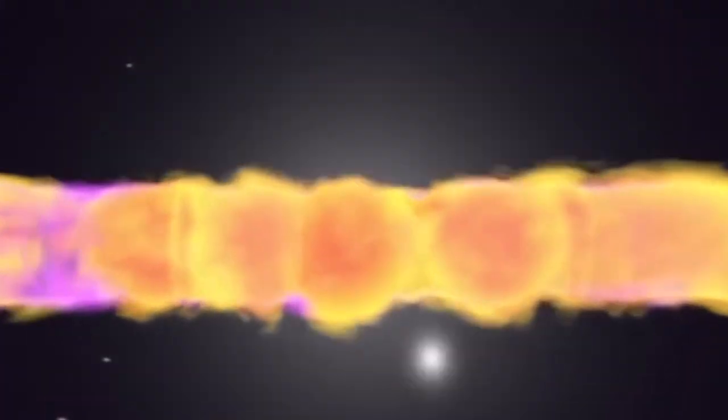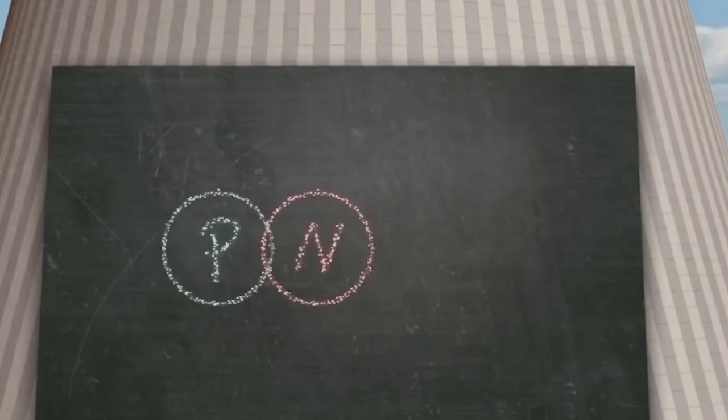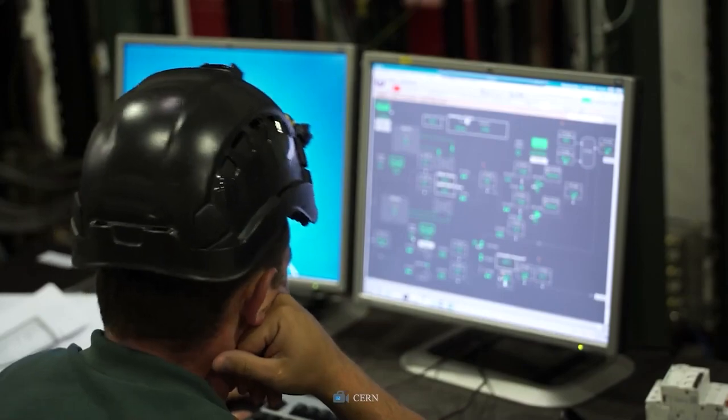The primary question is whether the Opera team observed particles traveling faster than light, or whether they were duped by an unforeseen systematic error in their experiment that caused the period to appear artificially short.